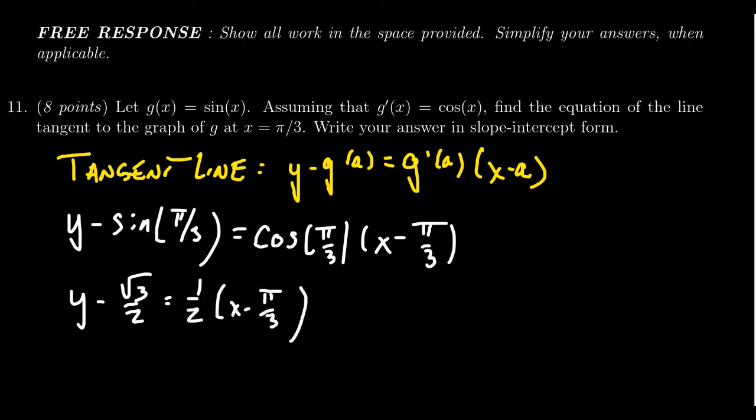So this gives us an equation of the tangent line. We have to put it in slope intercept form. So it's going to need to look like y equals mx plus b. Basically, we need to solve for y in this setting. So the first thing I'm going to do is distribute the 1 half through. This gives us 1 half x minus pi sixth.